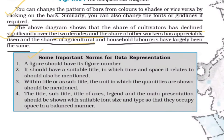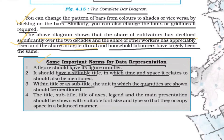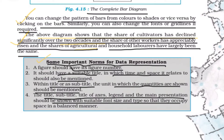Now look at some important norms for data representation using computer. Number one: a figure should have its figure number. It should have a suitable title mentioning the time and space it relates to. Within the title or subtitle, the unit in which quantities are shown should be mentioned. The title, subtitle, title of axes, and legend should be shown with a suitable font size and type so that they occupy space in a balanced manner.